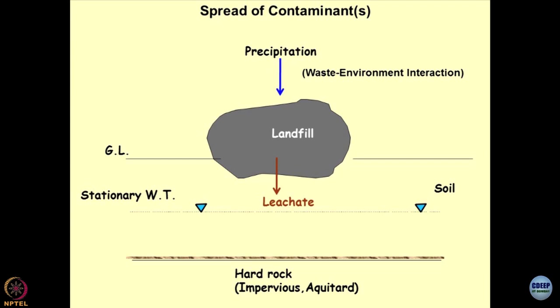Now suppose this water contains chemicals — inert chemicals, sodium chloride, potassium chloride, sea water. Suppose I do the same test by changing the percolant from water to sea water. The density changes, and sea water has different attributes with a lot of chemical activity — those chemicals are going to react with the soil; interaction starts.